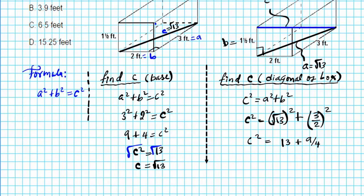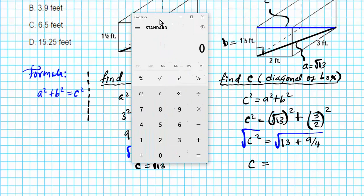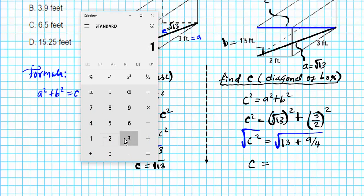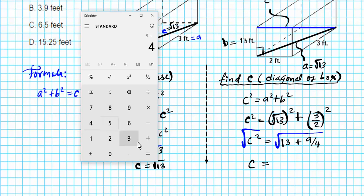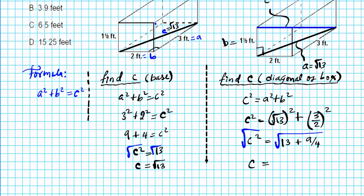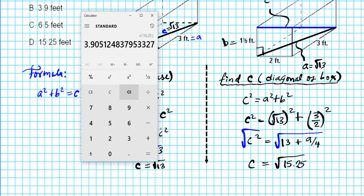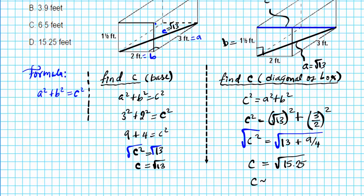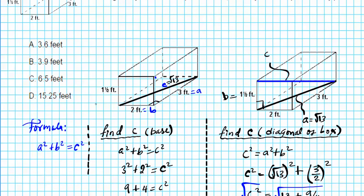To find C, we take the square root of both sides. Using a calculator: 9 divided by 4 is 2.25, plus 13 gives 15.25. Taking the square root of 15.25 gives us 3.9 feet to the nearest tenth. So 3.9 feet is your answer, and our answer is option letter B.